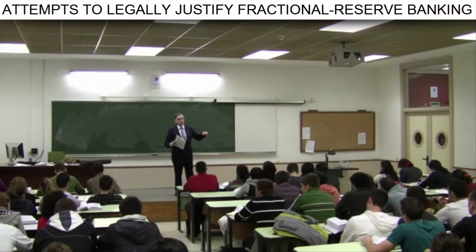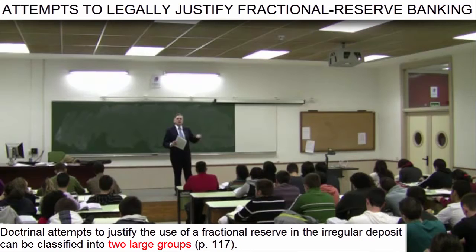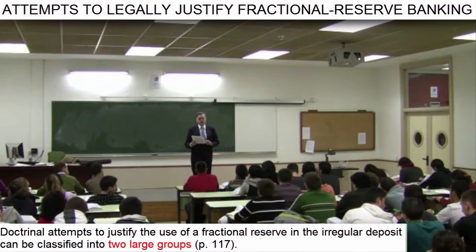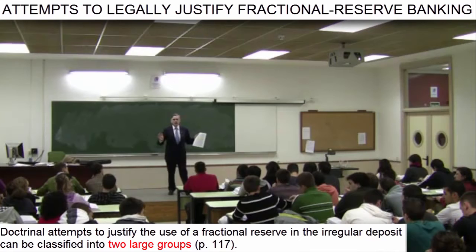So, in this chapter, we will study the two major attempts which, from the standpoint of legal doctrine, have been made to justify the behavior of bankers regarding the use of a fractional reserve with monetary bank deposits. From the legal perspective, theorists have tried to offer basically two alternative explanations for this behavior.